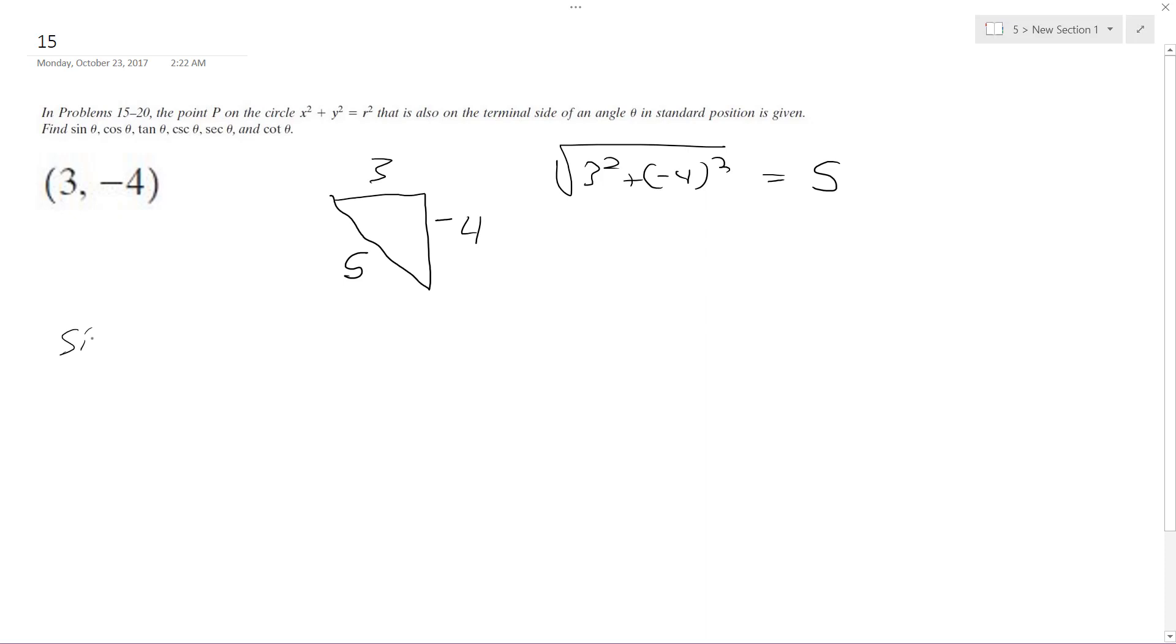So sine of theta in this case is going to be opposite over hypotenuse, which is negative 4 over 5.